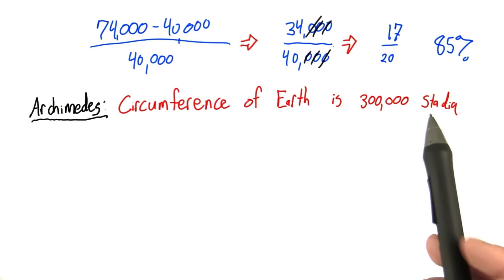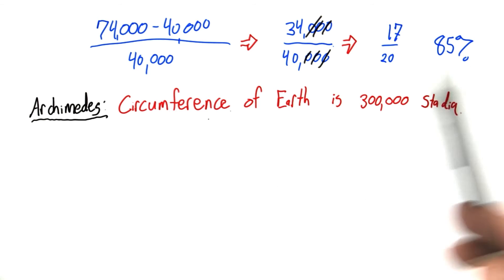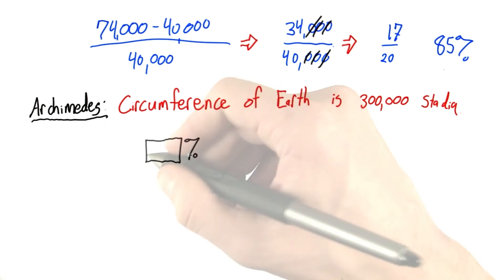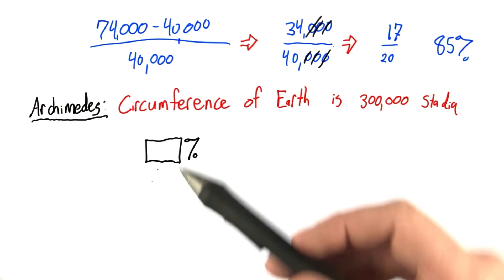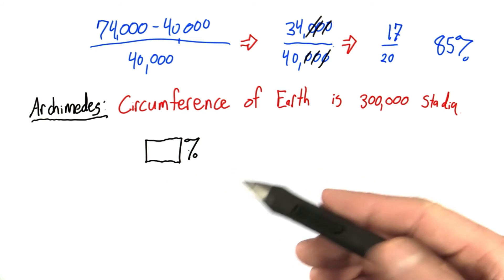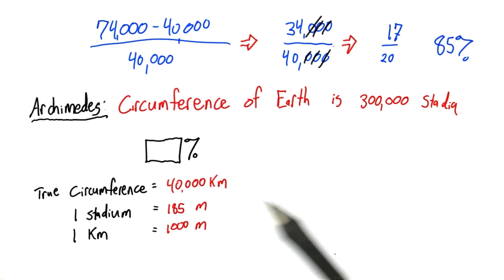I want you to tell me how far off was Archimedes. What was his percent error? You can enter your number here, and you don't need to include the percent sign. Some additional information you may need to use to make this calculation is that the true circumference of the Earth is 40,000 kilometers, one stadium is 185 meters, and one kilometer is 1,000 meters. Enter your answer here.